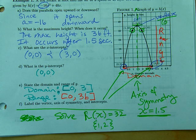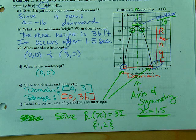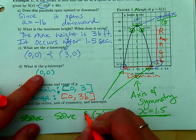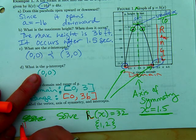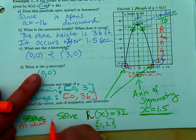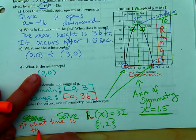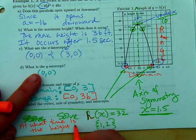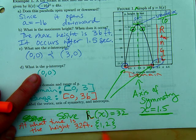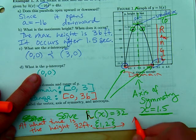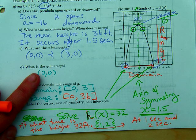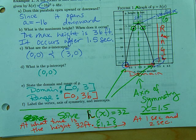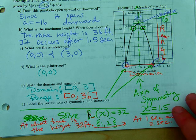This is h of x, meaning that the question could be at what time is the height 32 feet? And then your answer would be at one second and two seconds. The height is 32 feet above the ground, the height of the rocket. Is that making sense so far?